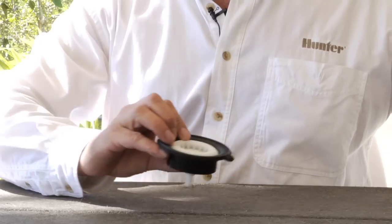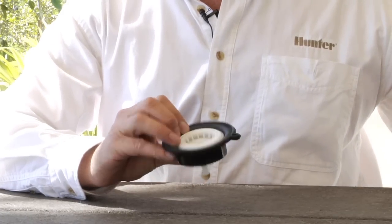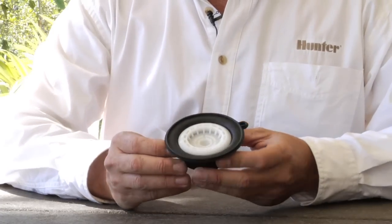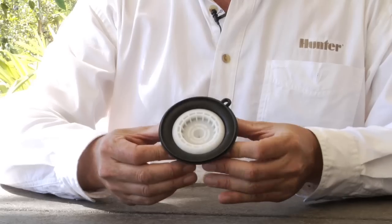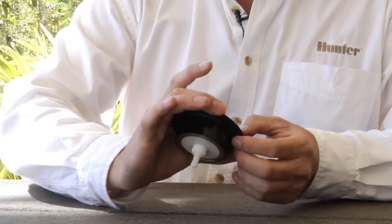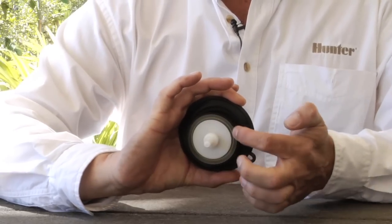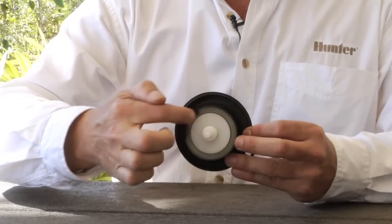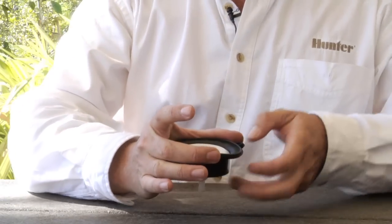The diaphragm operates off of something called surface area differential. And as you can see, the diaphragm sits horizontally in the valve. The top surface of the diaphragm here is much larger diameter than the bottom side. So the difference in surface area is what creates the differential.